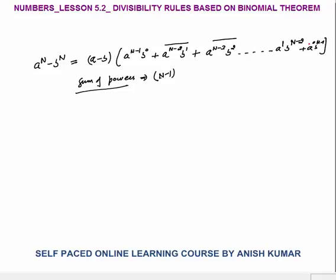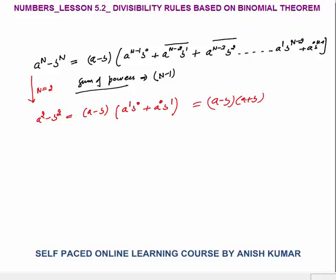All the formulas we learned in school are based on this binomial theorem. For example, a² minus b²: here n is 2. Putting n=2 gives a^1 · b^0 plus a^0 · b^1, multiplied by (a minus b). So a² - b² = (a - b)(a + b). Whatever you memorized in school is based on this binomial theorem.